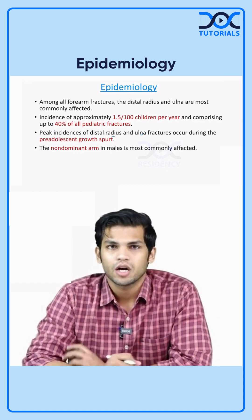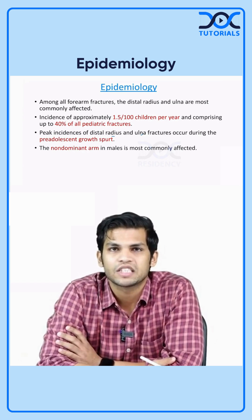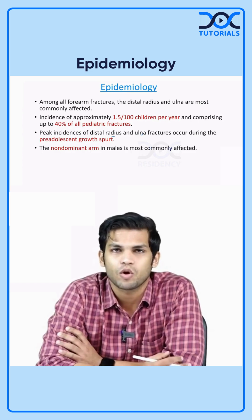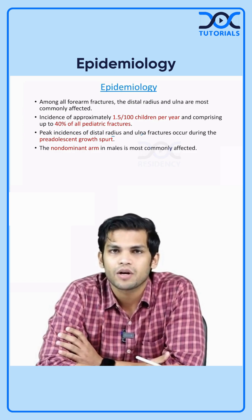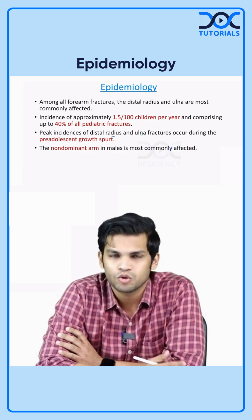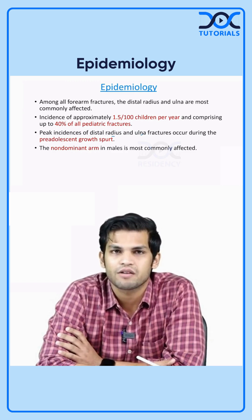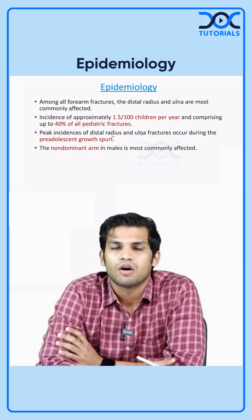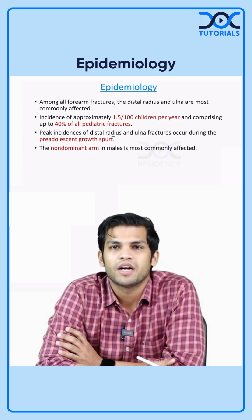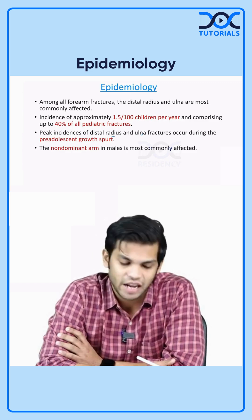Something about the epidemiology: among all the forearm fractures, the distal radius and ulna are the most commonly involved and most commonly seen fractures. In this talk, we would be mainly focusing on the distal radius ulna fractures, while all the other types of forearm injuries are covered in separate topics. Today we will be discussing distal radius and ulnar fractures in pediatric age groups. The incidence is 1.5 per 100 children per year and it comprises up to about 40% of all pediatric fractures.